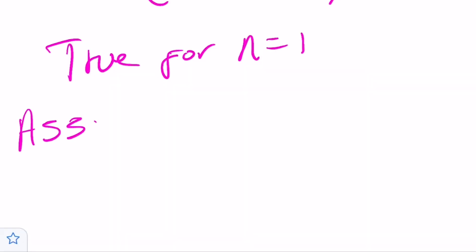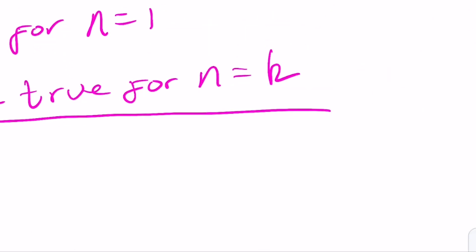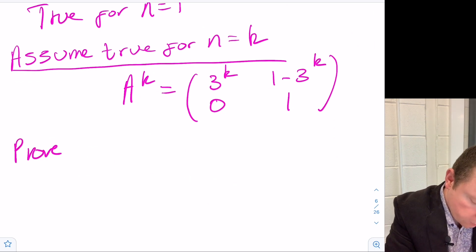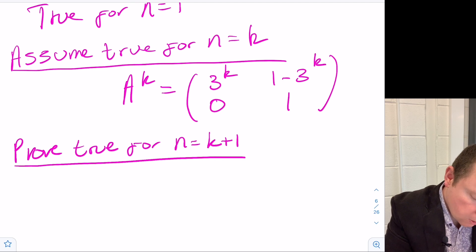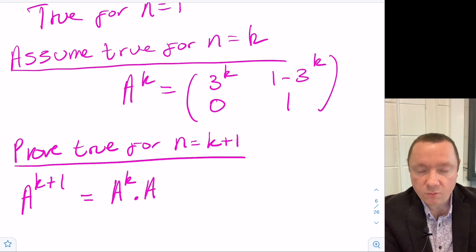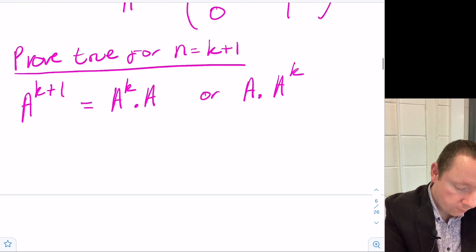Now assume true for n equal to k. Therefore A^k equals [3^k, 1 minus 3^k; 0, 1]. We now need to prove it true for n equal to k plus 1. When n equals k plus 1, A^(k+1) equals A^k times A.